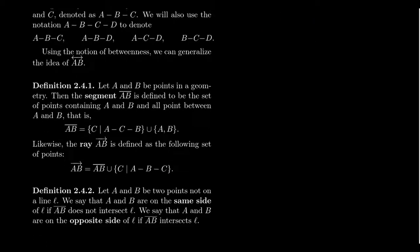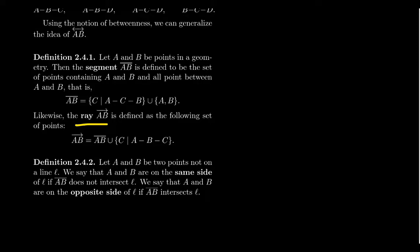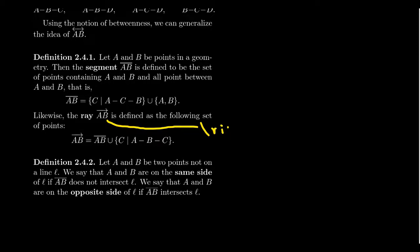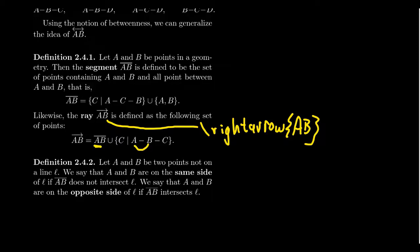Related to the segment, we also have the idea of a ray. A ray is defined to be the set including the line segment AB, unioned with everything that extends it. We look for all points C such that B is between A and C. In LaTeX this would be something like backslash rightarrow AB. The direction does matter here: going from A to B to C versus B to A to C can give different rays, so the order matters in the ray notation.